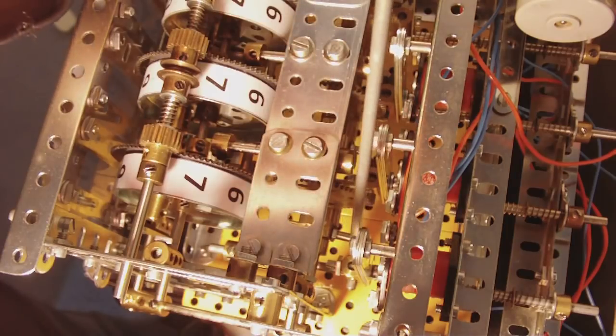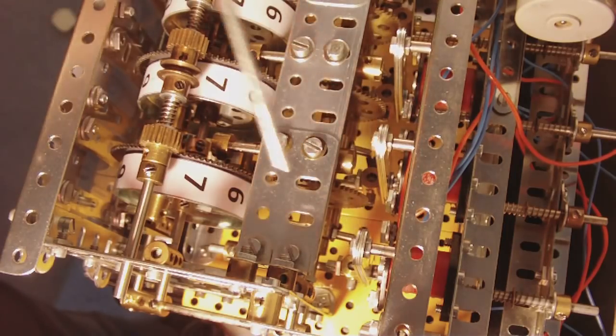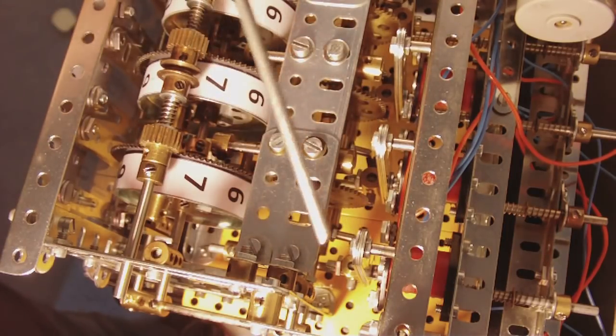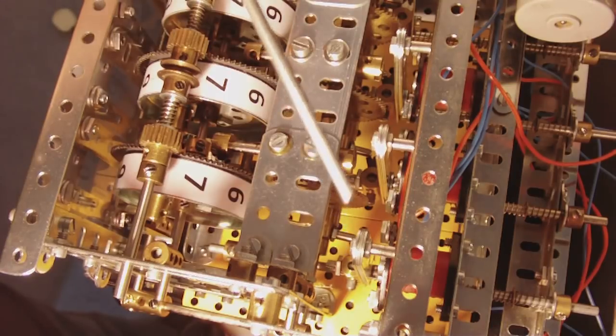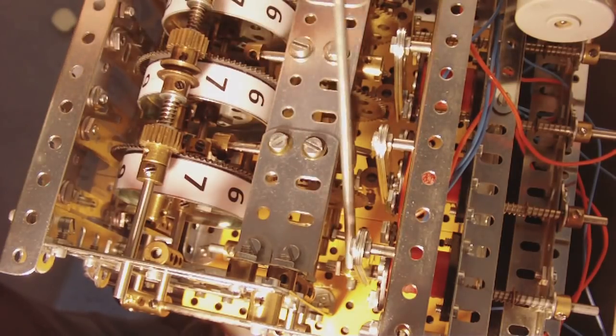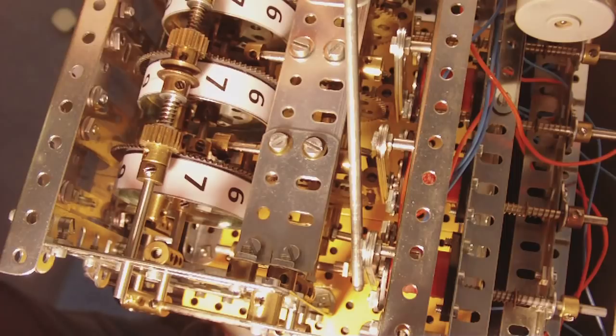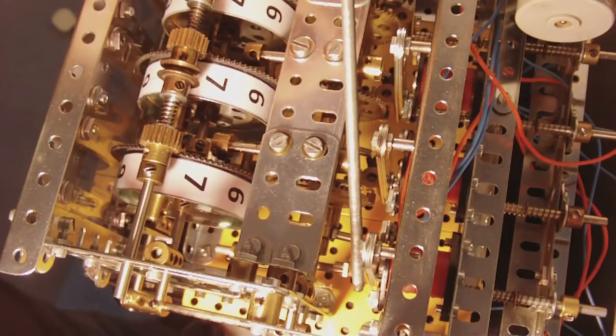The pallet pin engages on the center fork when it's all at rest, stopping the reel from moving. When the electromagnet operates, that center fork moves away from the pallet pin, allowing the detent to turn.